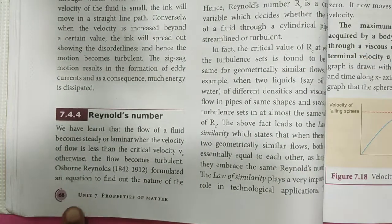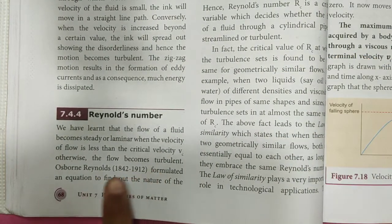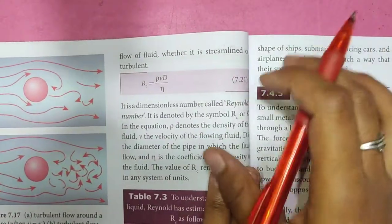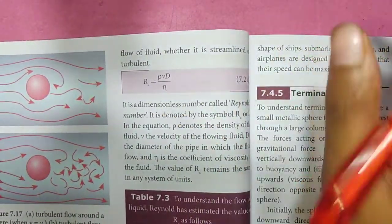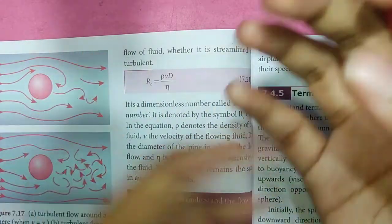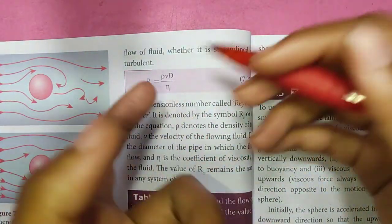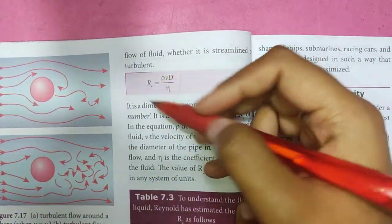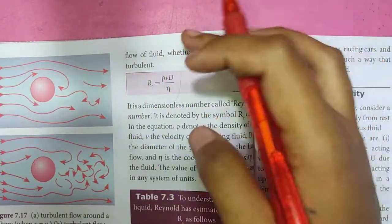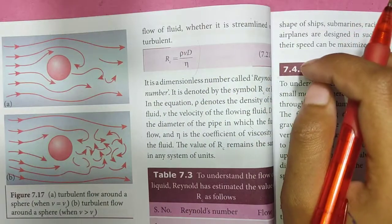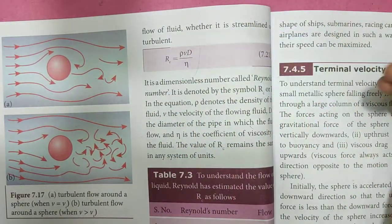Osborne Reynolds formulated an equation to find out the nature of the flow of liquid, whether it is streamlined or turbulent. He expressed this as one dimensionless number called the Reynolds number. Reynolds number is a dimensionless number.